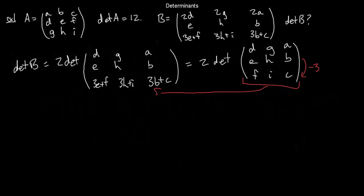This matrix D, G, A; E, H, B; F, I, C looks almost like A, but the columns are in a different arrangement — the first column is the second row of A, the second column is the third row, the third column is the first row. Columns have been swapped with rows, which means I should take the transpose. The determinant of a matrix equals the determinant of its transpose, so that's fine. The transpose gives D, E, F; G, H, I; A, B, C.